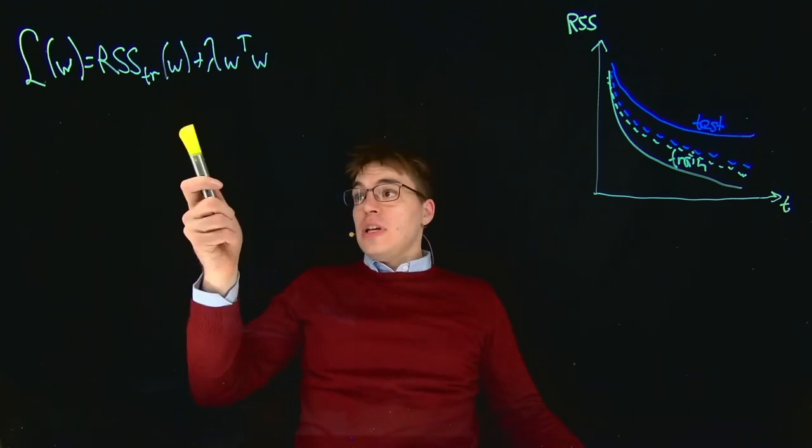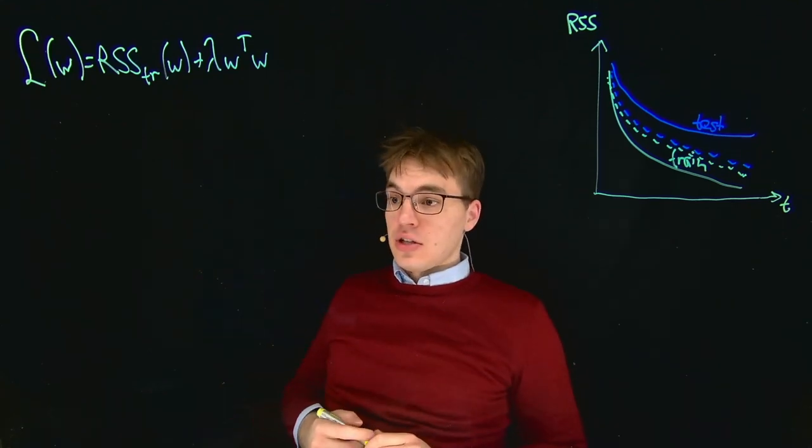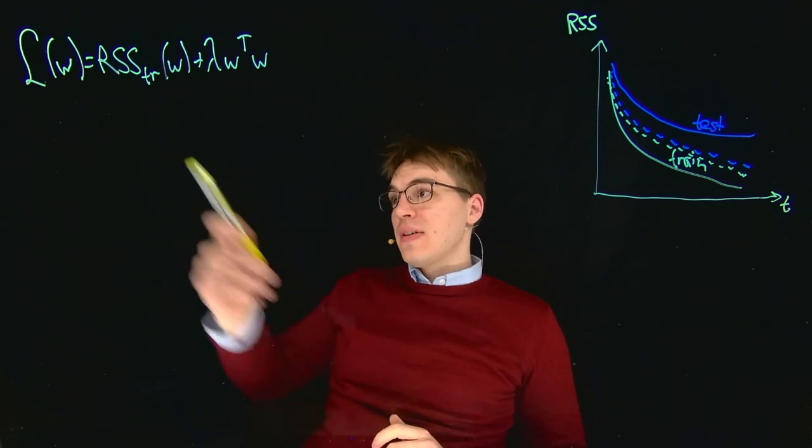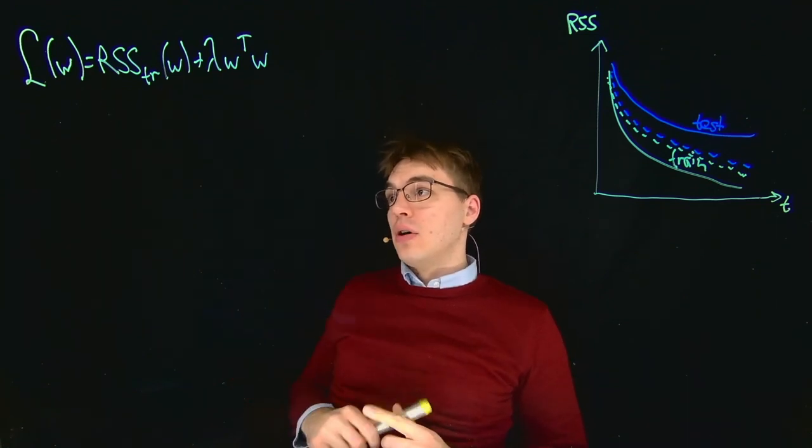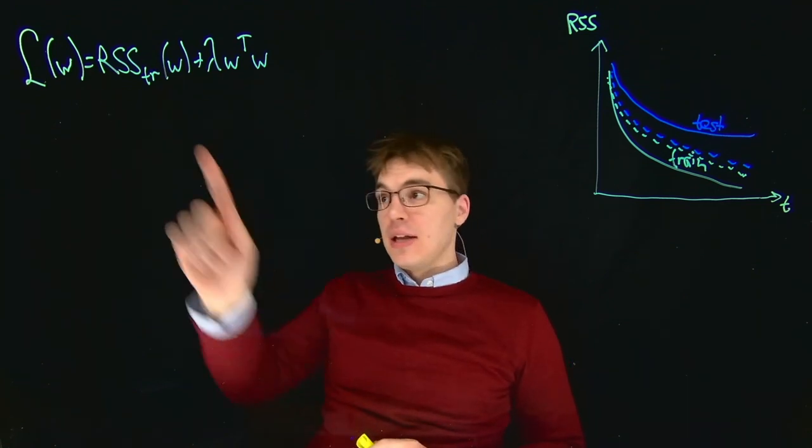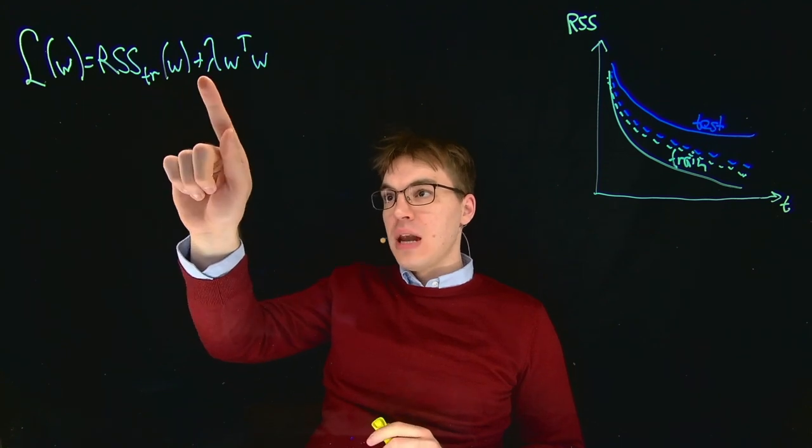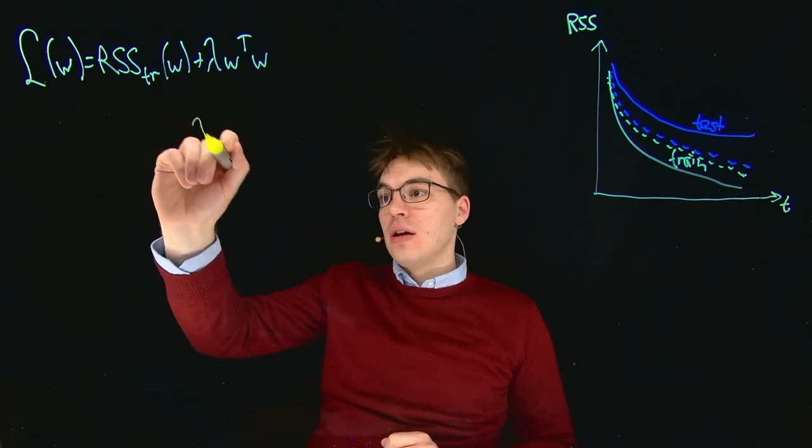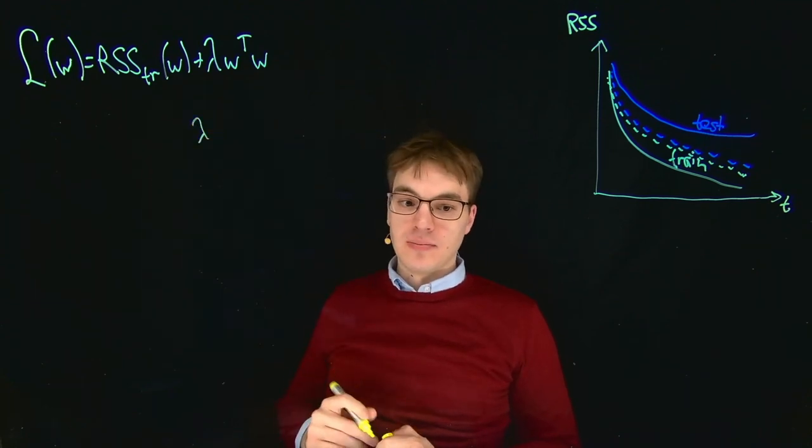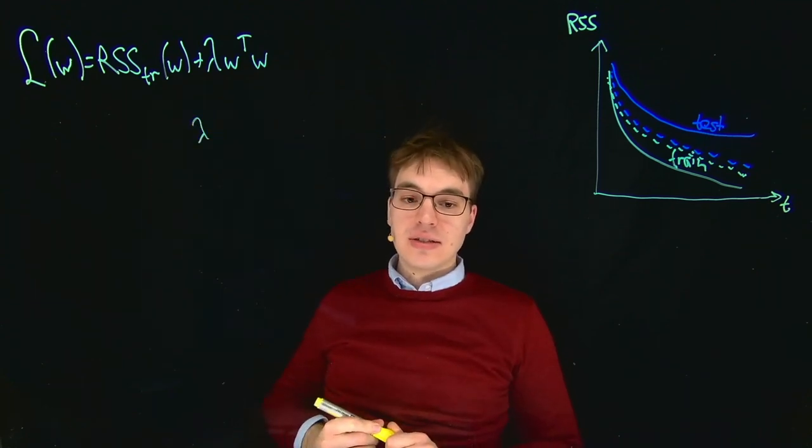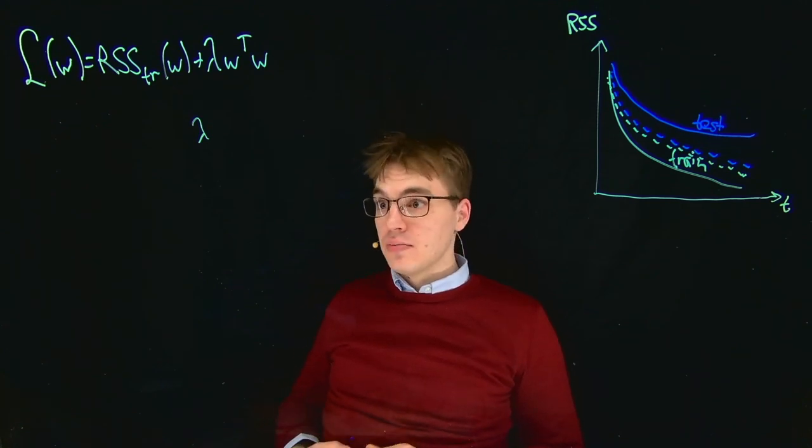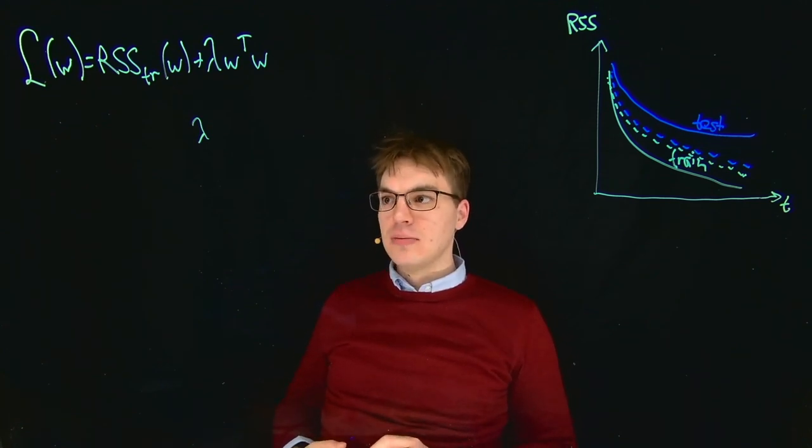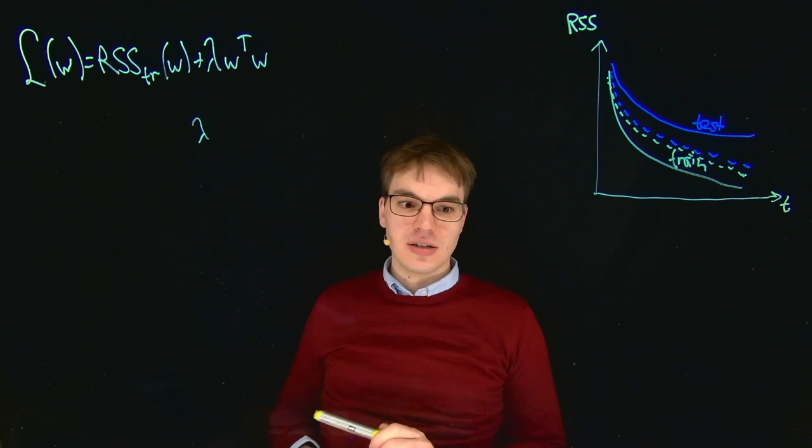Over here you can see our loss function, and our loss function consists of our RSS term in the training case plus this regularization term which contains our hyperparameter lambda. And the question now is how to choose the hyperparameter lambda and also what happens if it gets too large, for example, so if we get too much of this regularization term.